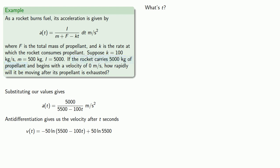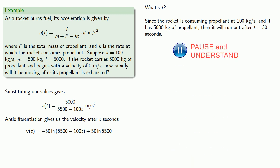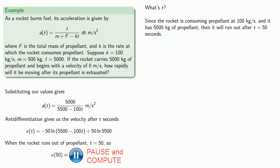Since the rocket is consuming propellant at 100 kilograms per second, and it has 5000 kilograms of propellant, then it will run out after T equals 50 seconds. So we find the velocity at 50, which will work out to around 120 meters per second.